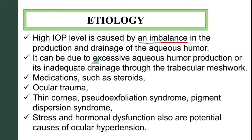High intraocular pressure is caused by an imbalance in the production and drainage of the aqueous humor. It can be due to excessive aqueous humor production or inadequate drainage through the trabecular meshwork. The aqueous humor is produced by the ciliary body, then enters the posterior chamber, moves to the anterior chamber through the pupil, and drains through the iridocorneal angle via the trabecular meshwork, canal of Schlemm, and into the venous system.